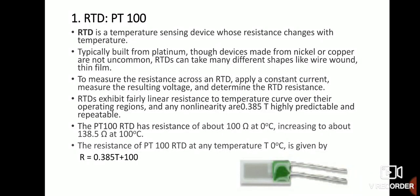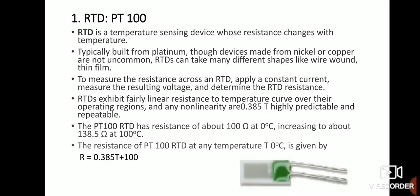The first type of sensor is the RTD, that is the Resistance Temperature Detector. An RTD is a temperature sensing device whose resistance changes with temperature. Typically it is built from platinum, nickel, or copper, and can take many different shapes like wire wound or thin film. To measure the resistance, apply a constant current through the RTD, then measure the voltage across it.